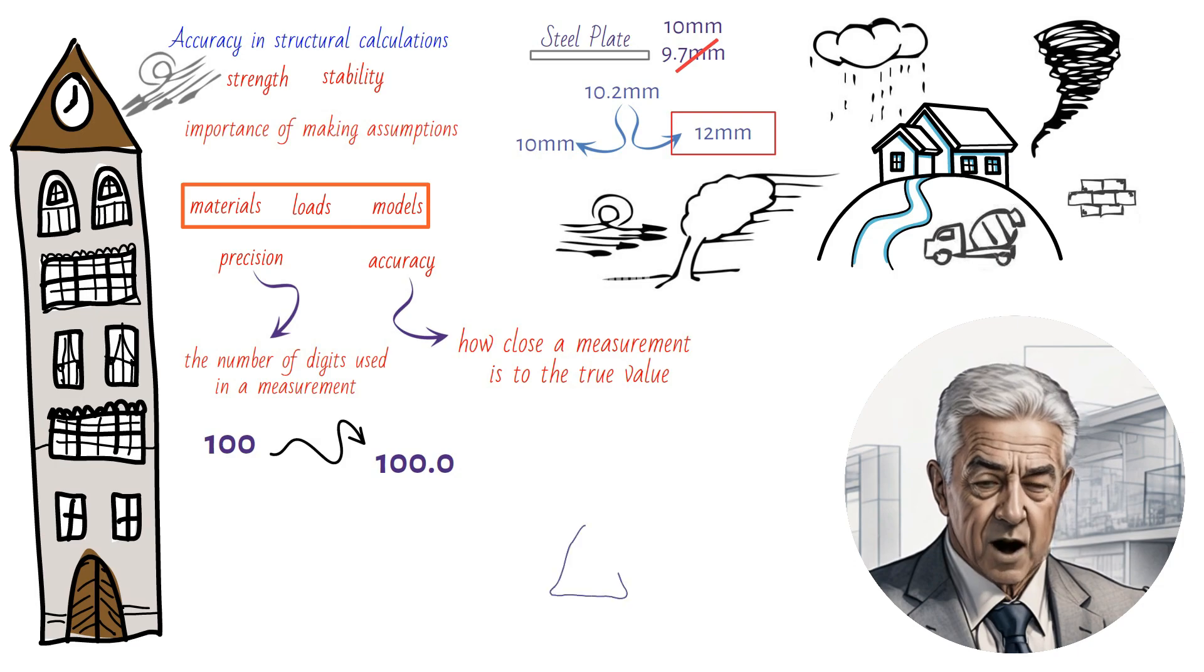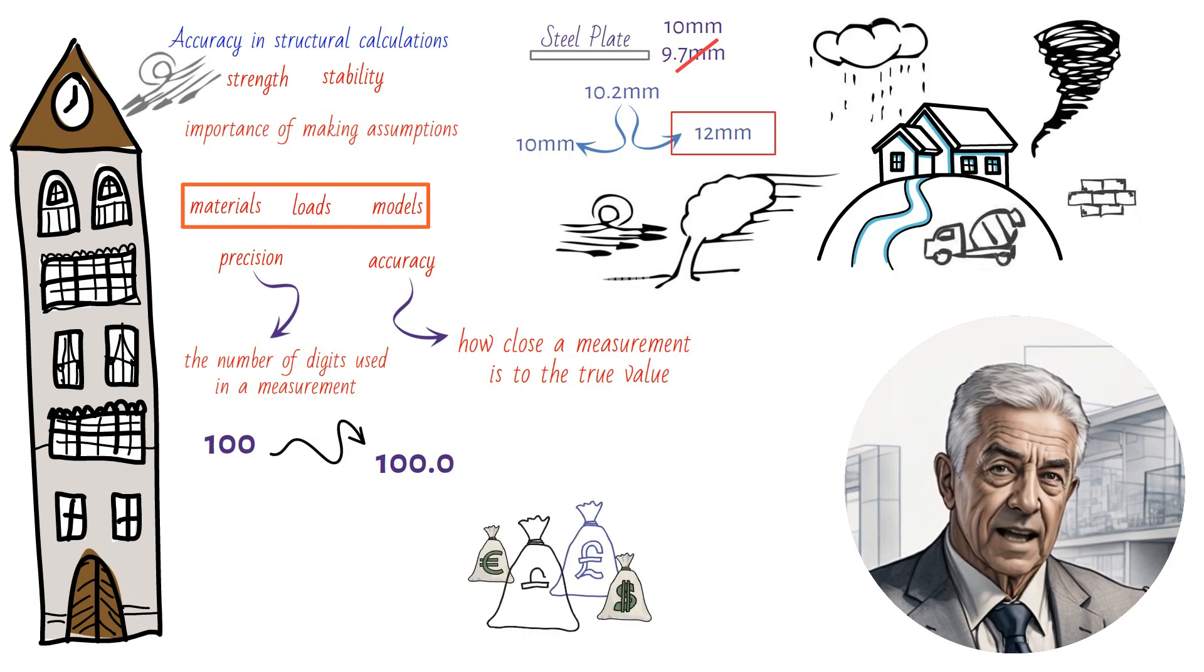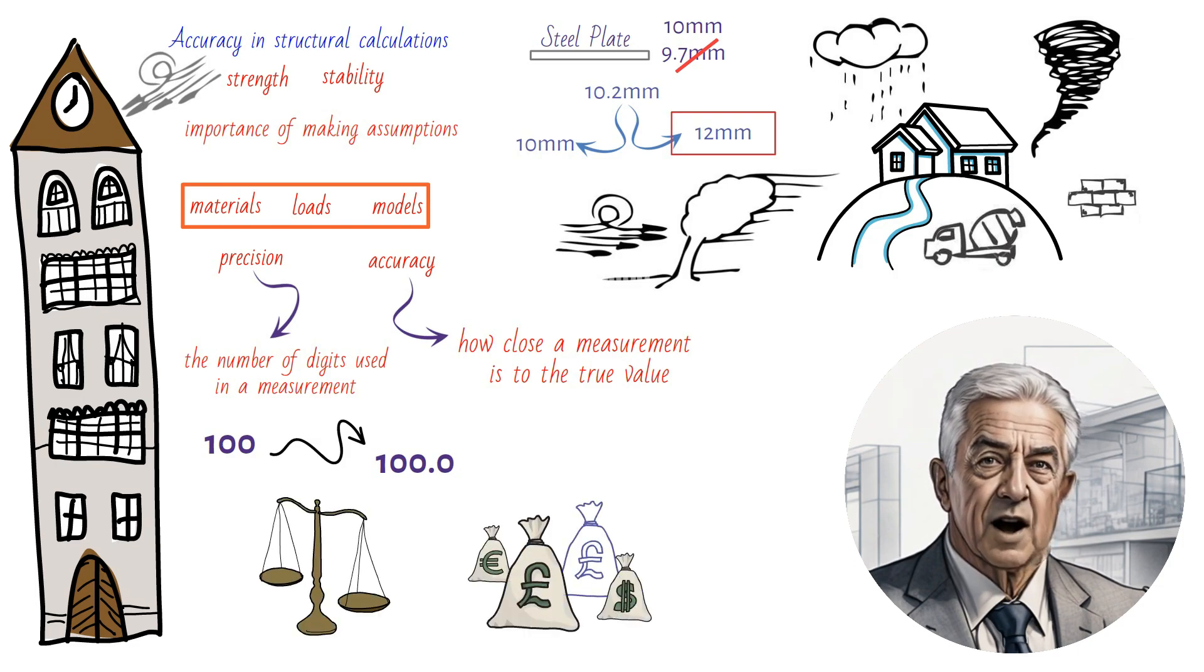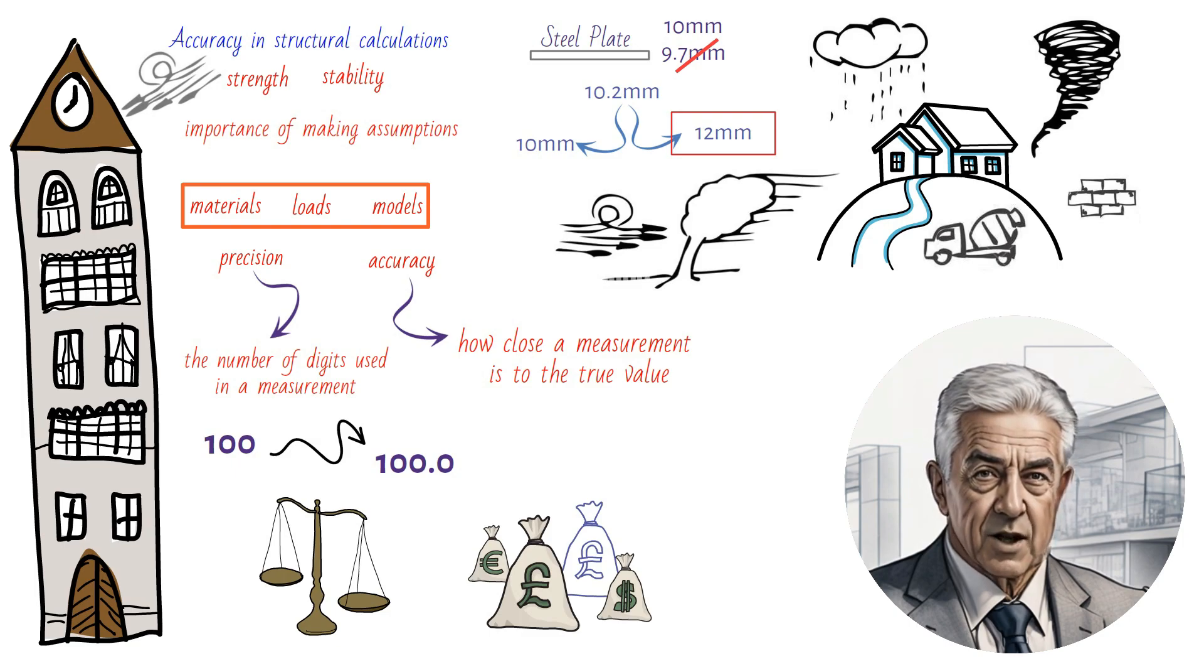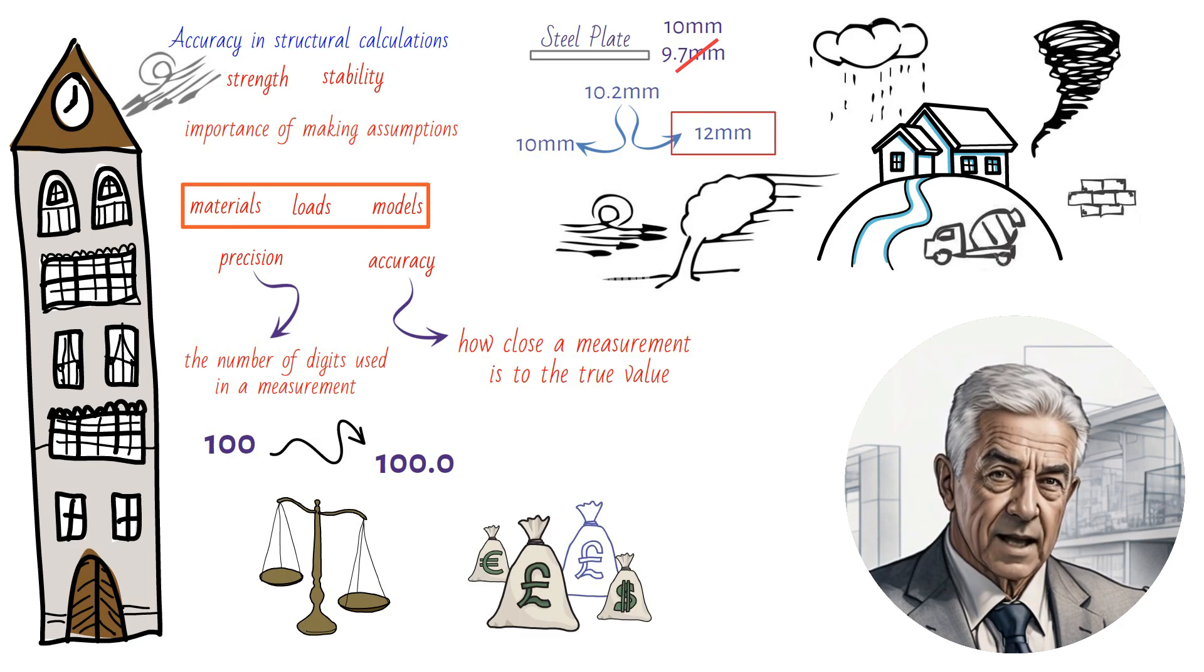When it comes to cost, it is important to find the balance between precision and cost. The more precise and accurate the calculations, the more expensive the structure will be, but it also means that there is less risk of failure and more safety for the people who use it.